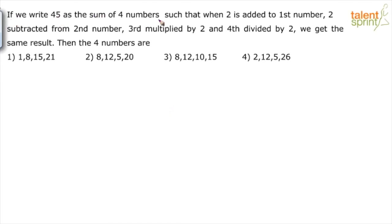If you write 45 as the sum of four numbers such that when 2 is added to first number, 2 subtracted from second number, third number multiplied by 2 and fourth divided by 2, we get the same result. Then the four numbers are.